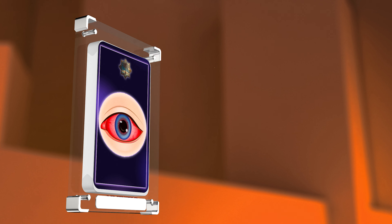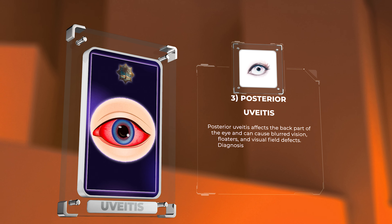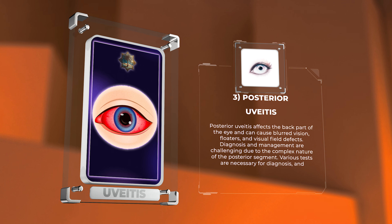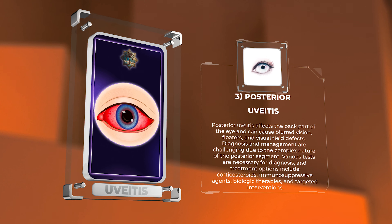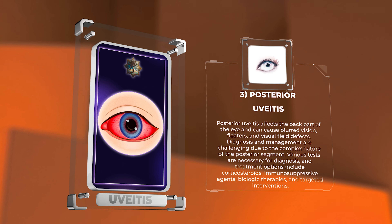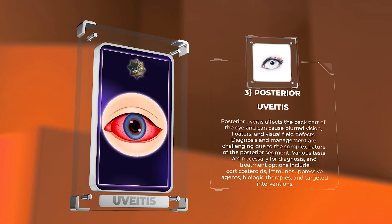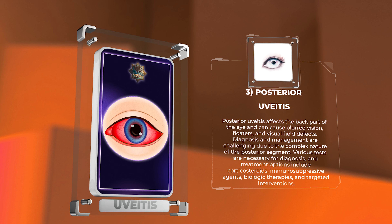Posterior uveitis affects the back part of the eye and can cause blurred vision, floaters, and visual field defects. Diagnosis and management are challenging due to the complex nature of the posterior segment.